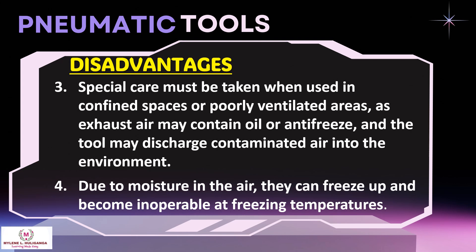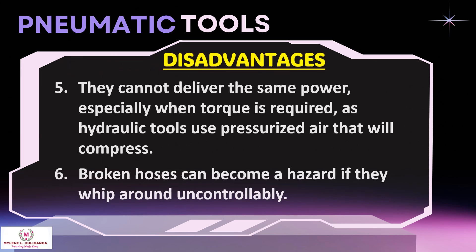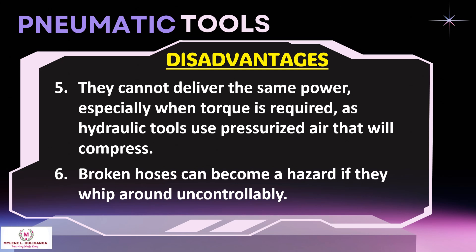Number 4: due to moisture in the air, they can freeze up and become inoperable at freezing temperatures. Number 5: they cannot deliver the same power, especially when torque is required, as hydraulic tools use pressurized air that will compress. Number 6: broken hoses can become a hazard if they whip around uncontrollably.